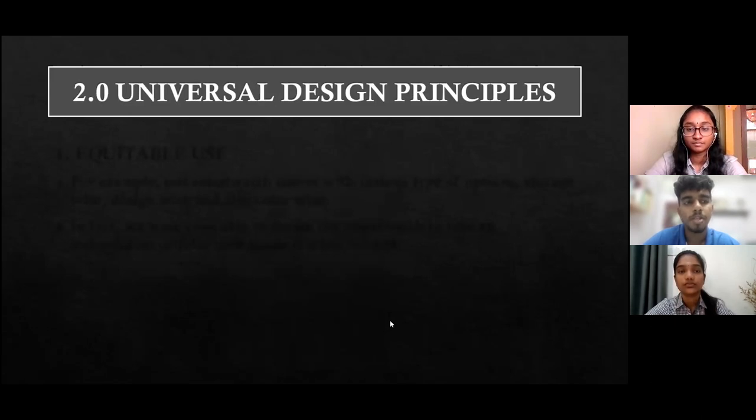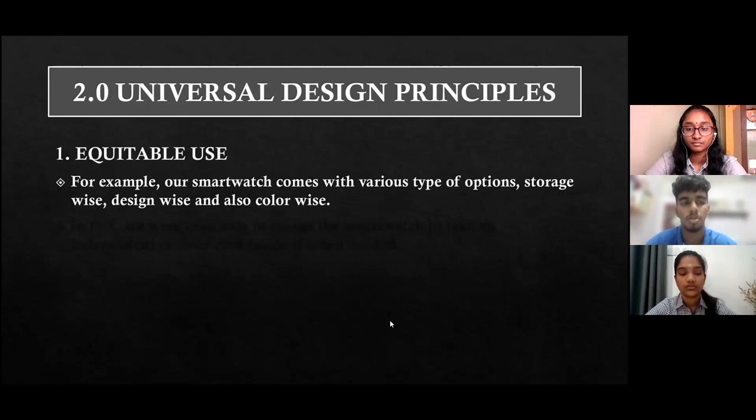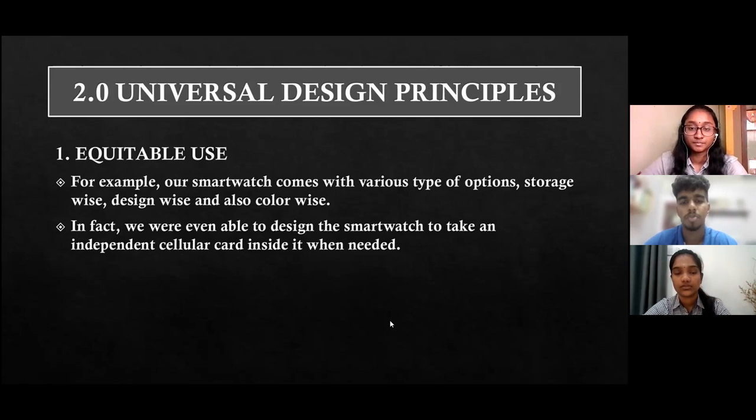We have implemented several principles when designing the smartwatch. The first one is equitable use. Equitable use provides the same means for all users, identical whenever possible or equivalent when not. This principle avoids segregating or stigmatizing any users. This is available for all kind of users. It doesn't matter if it's a small child or you're a senior citizen, you can use it doesn't matter what age you are in. The example is our smartwatch comes with various types of options: storage wise, design wise and also color wise. We were even able to design the smartwatch to take an independent cellular card inside or the Wi-Fi variant when needed.